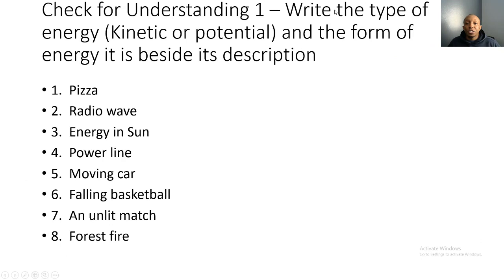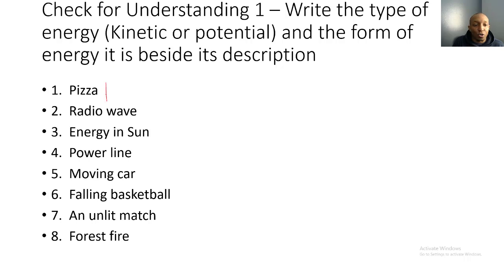Time for your first check for understanding. You're going to write the type of energy — kinetic or potential — and the form of energy beside its description. Let's do the first one together: pizza. Pizza doesn't move, so it's potential energy, and it's in the form of chemical energy — because when we eat pizza, we break those chemical bonds to release that energy.